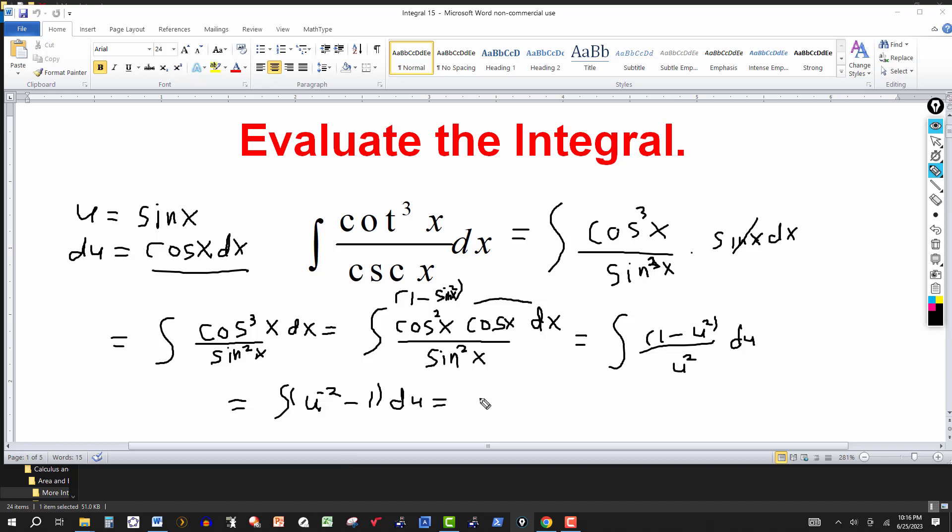We add a 1 to the negative 2, this would be a negative 1. And we divide the coefficient 1 by negative 1, this would be a minus. Then minus 1, the integral with respect to u is just a minus u plus the constant of integration.